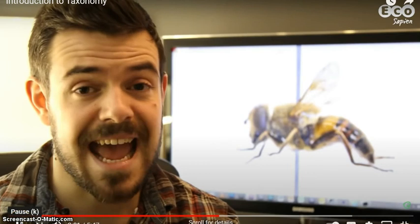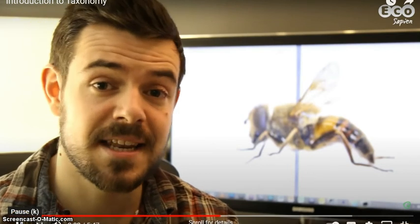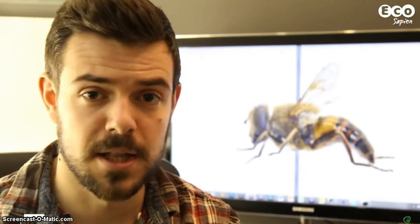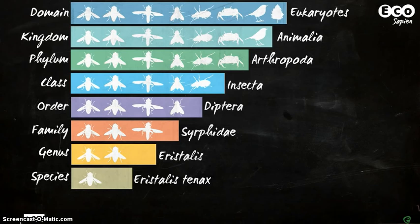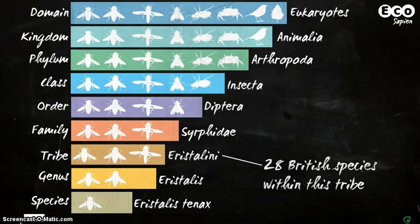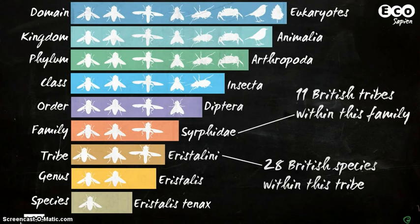In the case of the drone fly, all British Eristalis species, and another 18 British drone fly species, fall into the tribe Eristalini. The hoverfly family in Britain contains another 11 tribes.